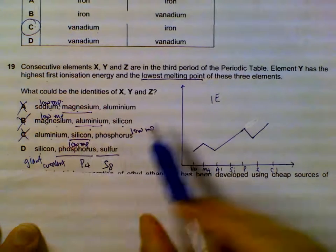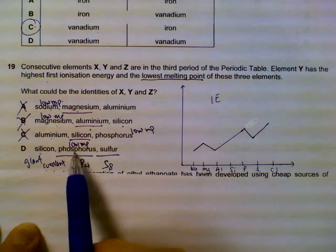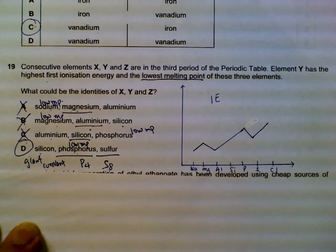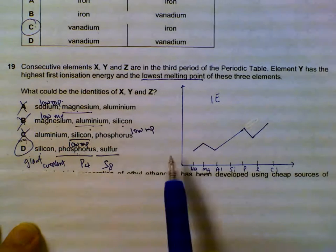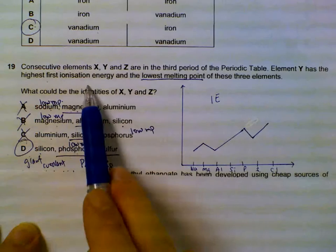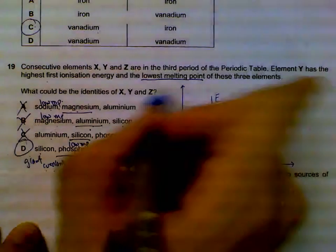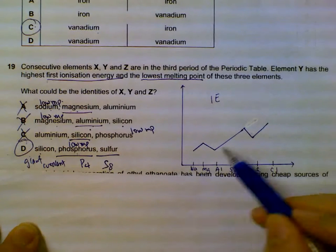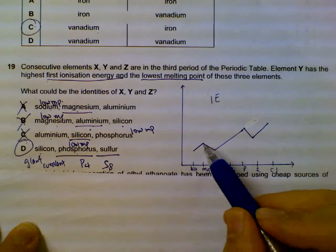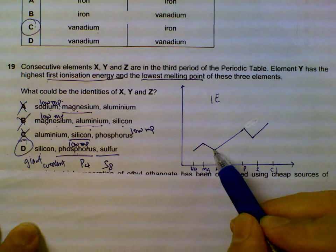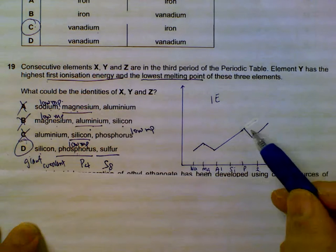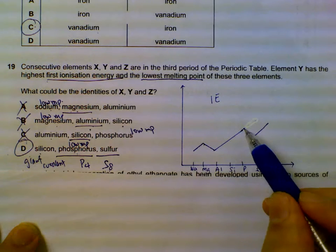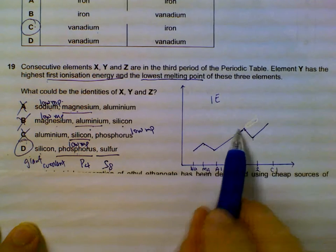Just by looking at the melting point alone, we can confirm D is the answer. If it doesn't work out, you need to use the first ionization energy. Generally the trend is increasing, but there are slight deviations — from magnesium to aluminium, and from phosphorus to sulfur. In this case, phosphorus also has the higher ionization energy among the three.